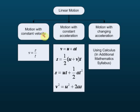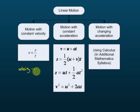Motion with constant velocity means the velocity does not change from the beginning to the end — the velocity is the same. For motion with constant velocity, we solve it using the formula v = s/t, where v is velocity or speed, and s is displacement divided by time.